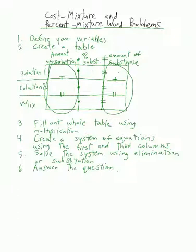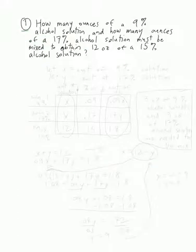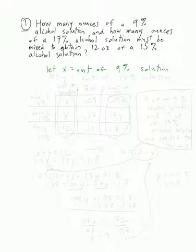Let's do our first problem. How many ounces of a 9% alcohol solution and how many ounces of a 17% alcohol solution must be mixed to obtain 12 ounces of a 15% alcohol solution? We're going to let x equal the amount of 9% solution and y equal the amount of 17% solution.